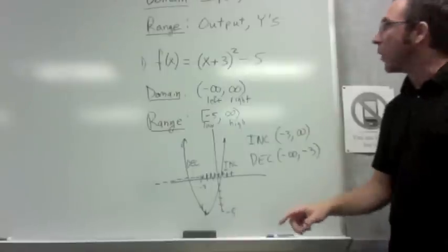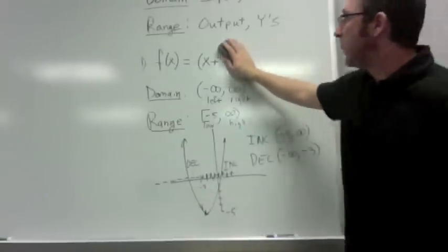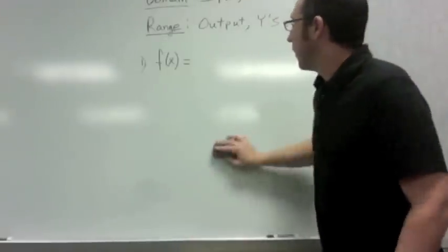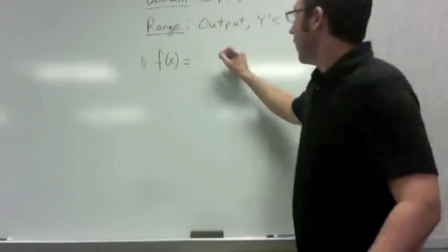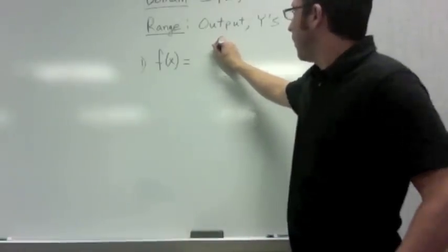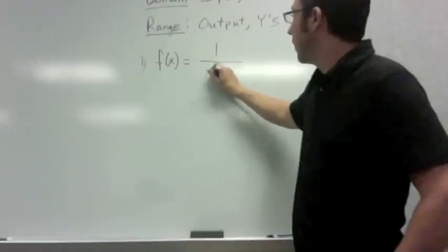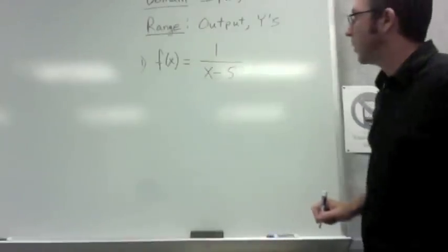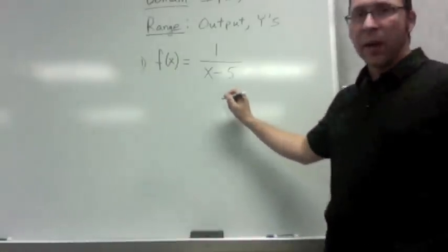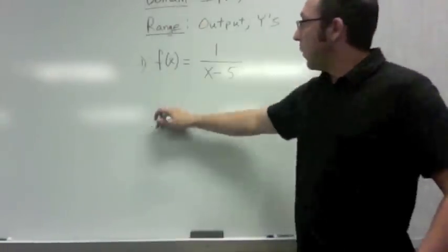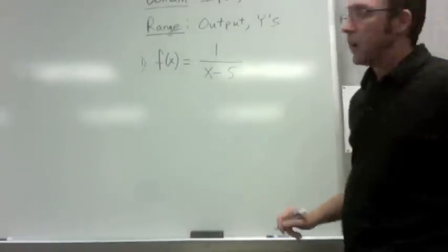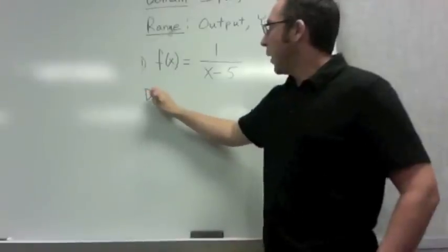We've got time to sneak in one more example of something that's maybe a little bit more complicated or more interesting. If I change the equation to, let's say, 1 over x minus 5, what we're going to see on a graph like that is we're going to see that not all real numbers would work out.